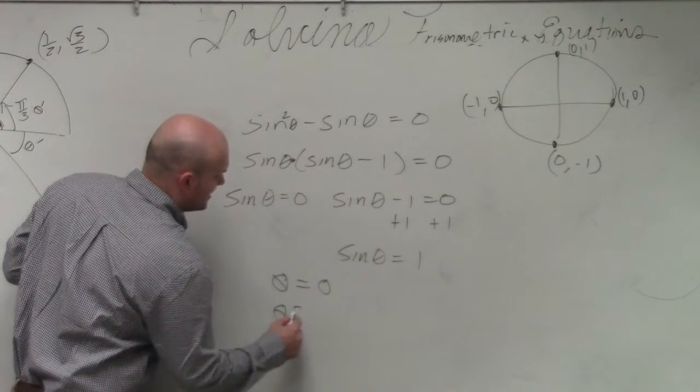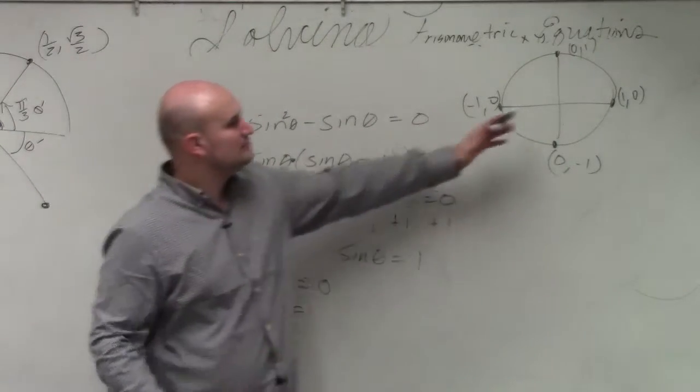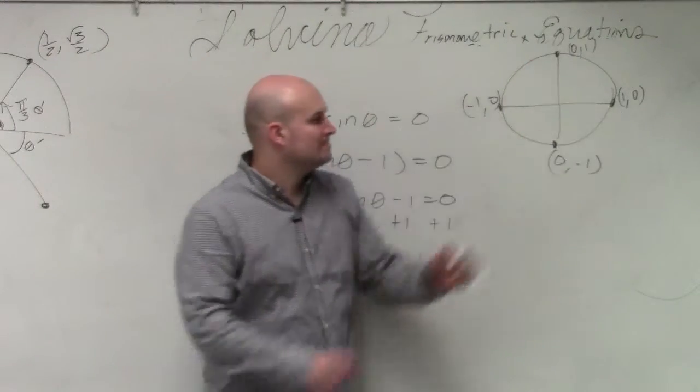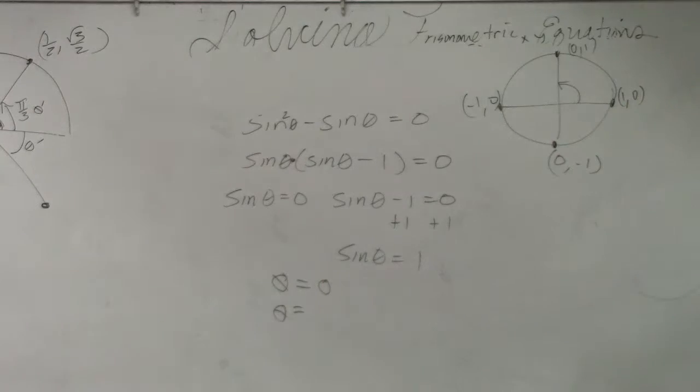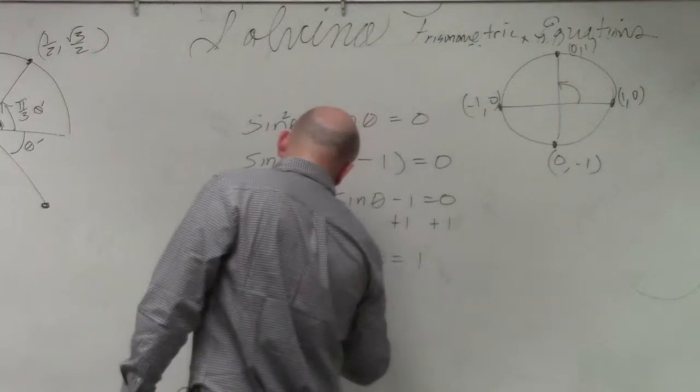And then for what angle does sine equal 1? Right, 90 degrees. In radians, though, that's going to be? Pi over 2. Pi over 2. OK. Pi over 2.